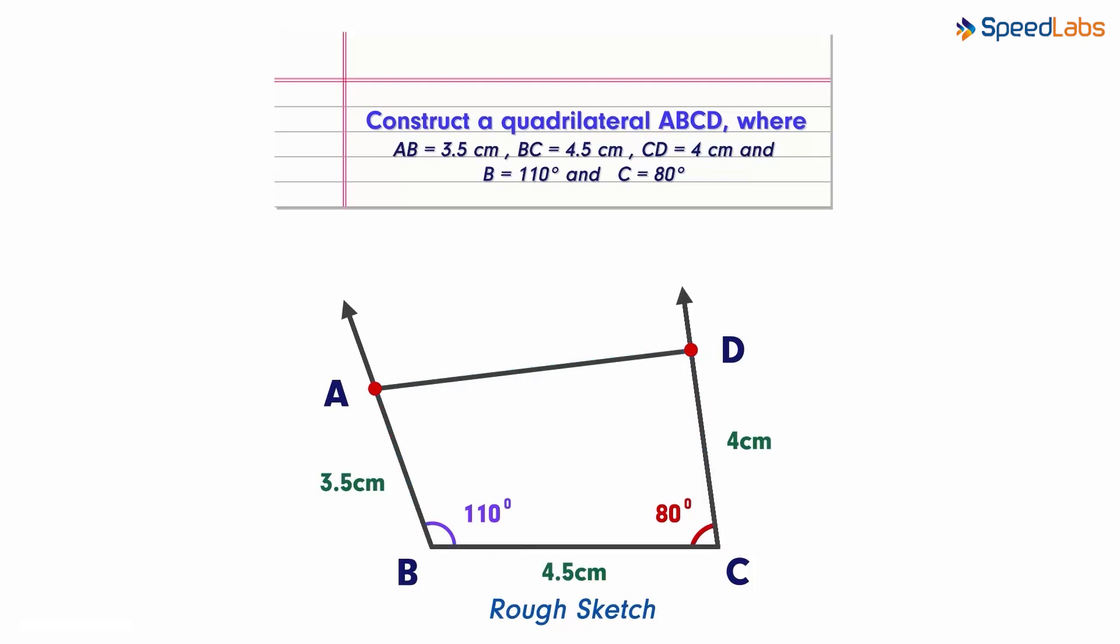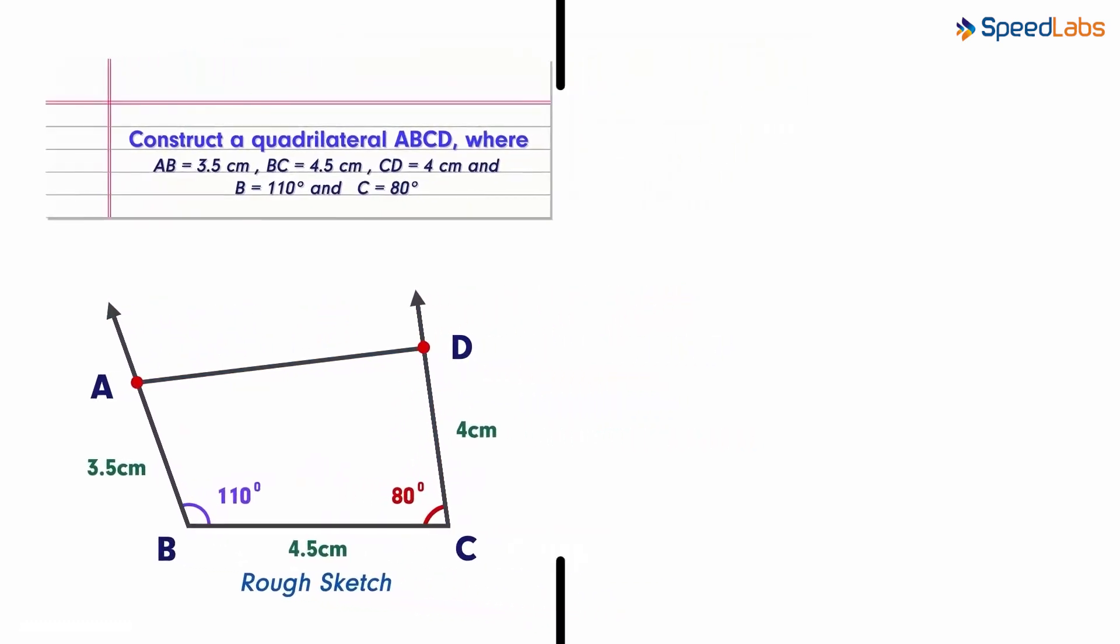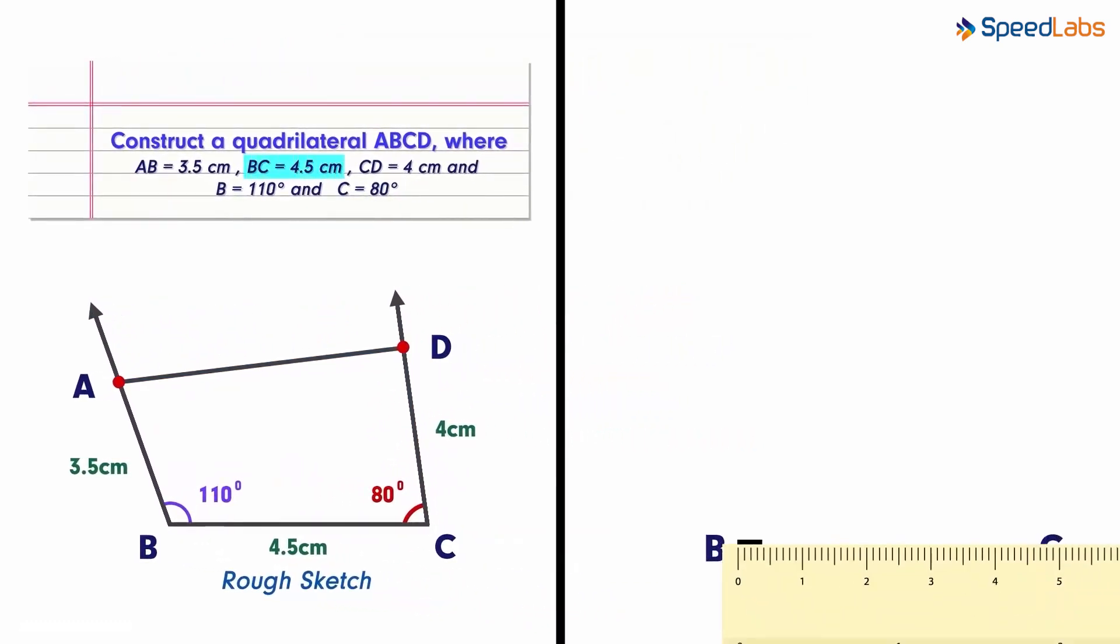We'll start by making a line segment and subsequently construct angles to finally form a quadrilateral. We shall start with constructing the base BC as 4.5 cm.